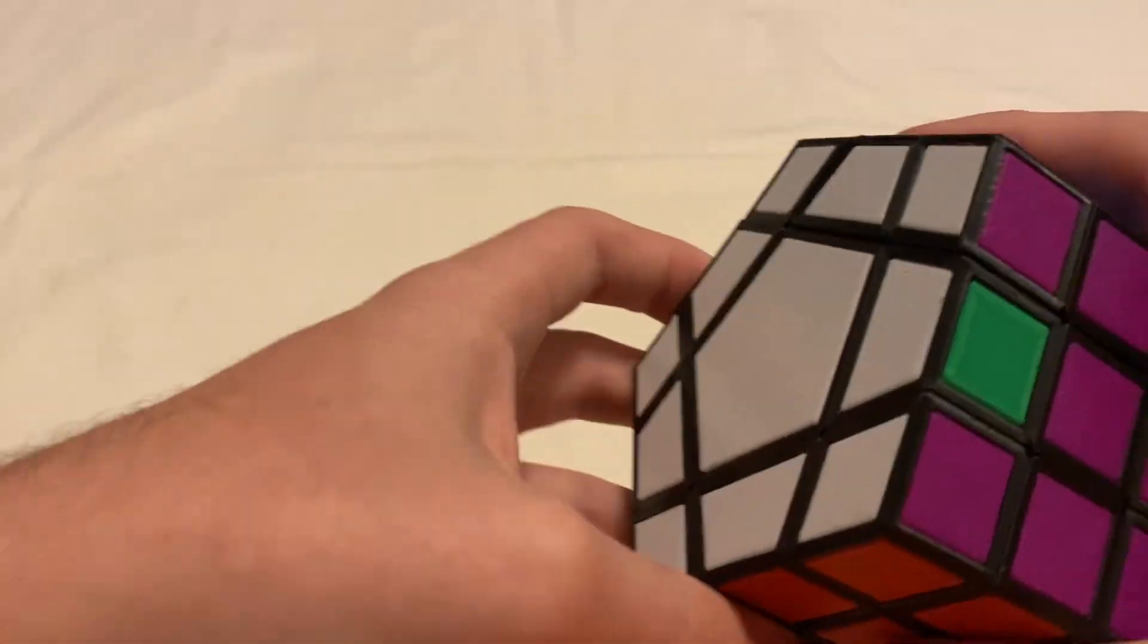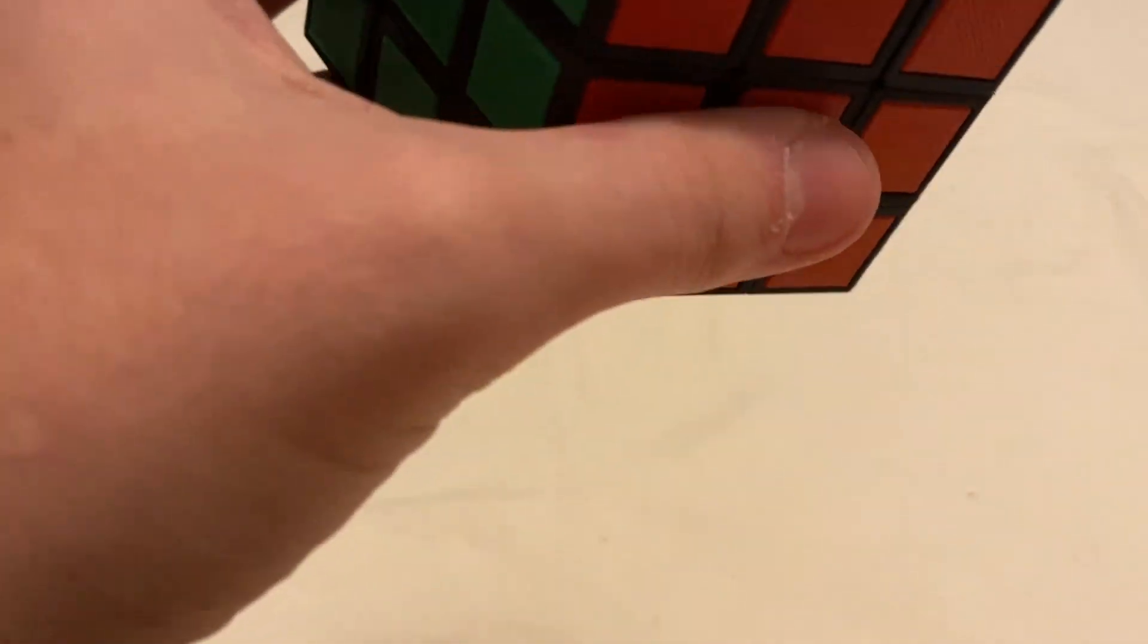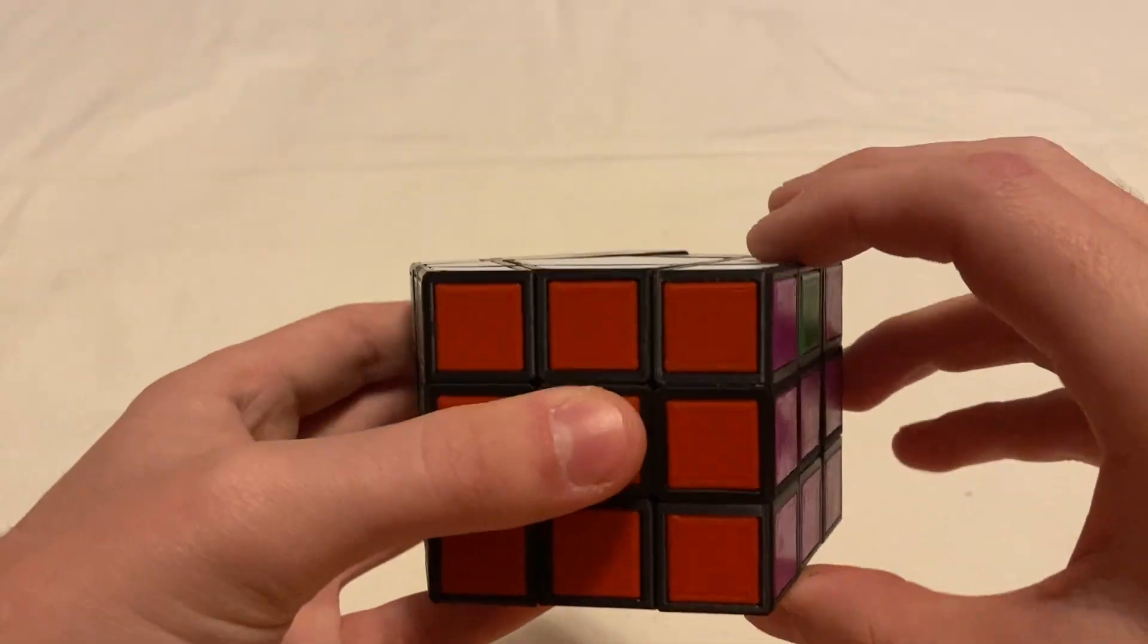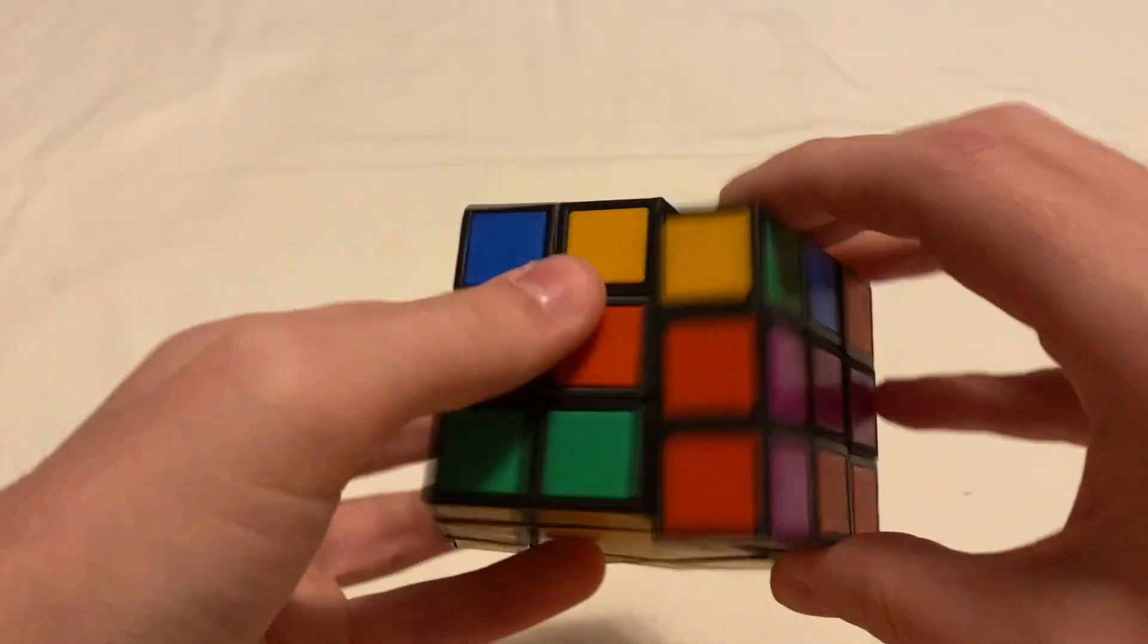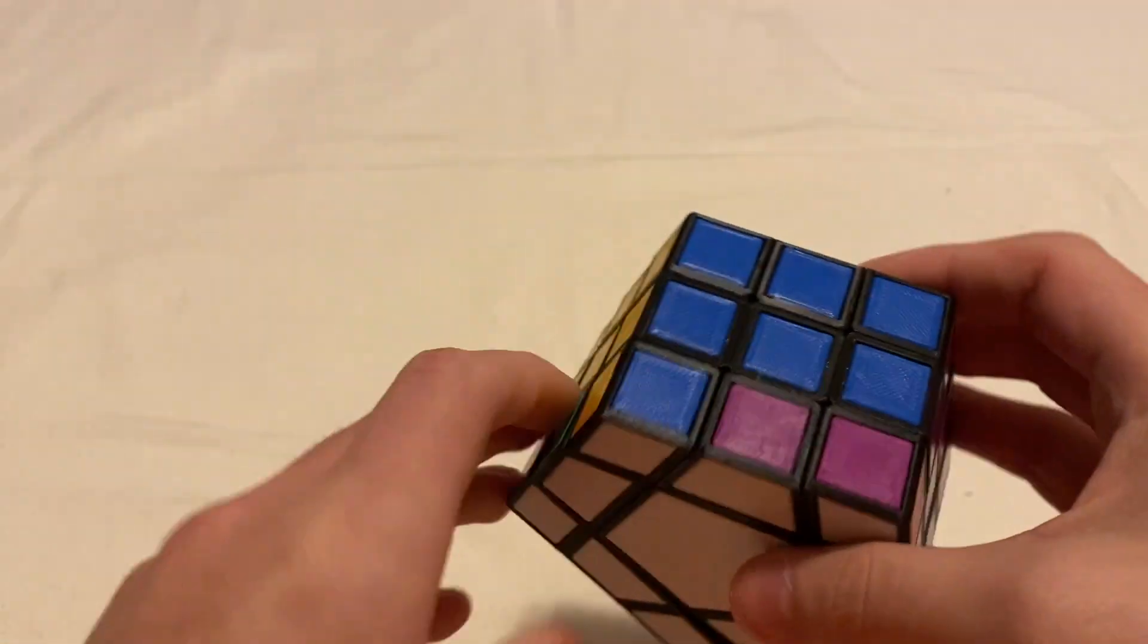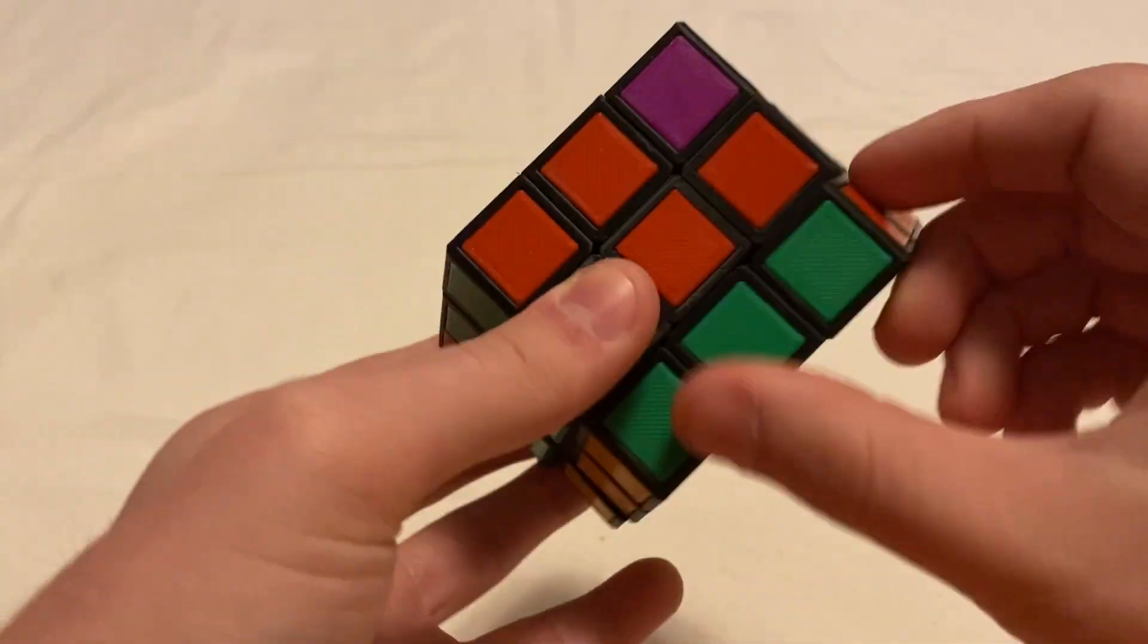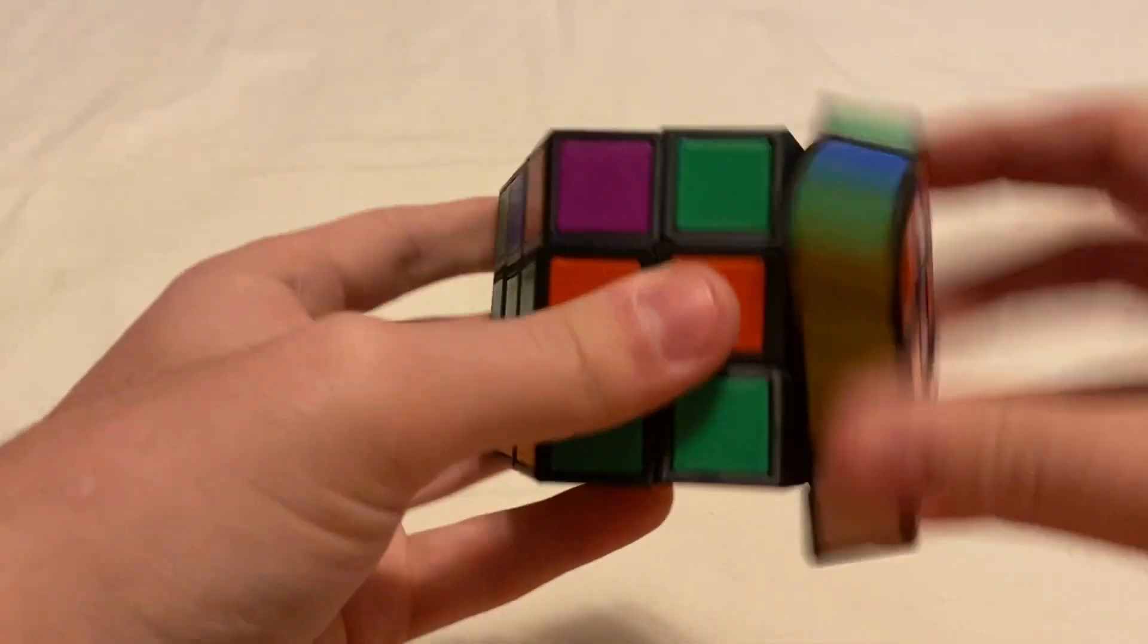And it looks like the top layer corners are already solved. And I actually came up with an algorithm that cycles three edges. It cycles this one, this one, and this one. And it is this one. So, that's actually a cuboid algorithm. As you can see, it preserved these two, but it cycled these around. So, if we do that three times, it gets you right where you started.